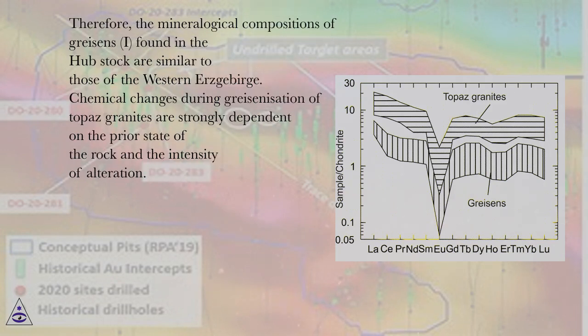Therefore, the mineralogical composition of greisens found in the Hubstock are similar to those of the western Erzgebirge.